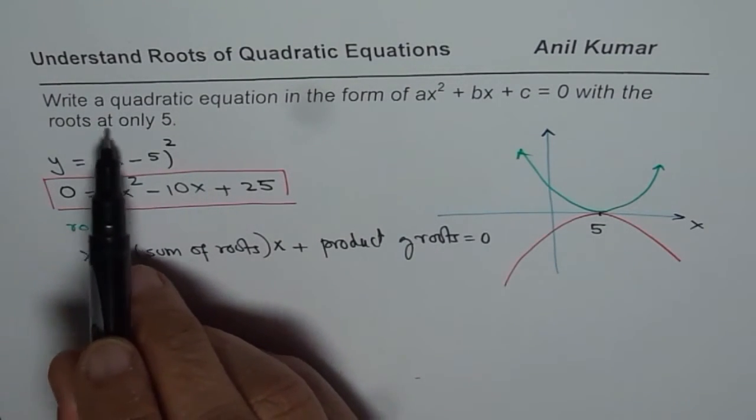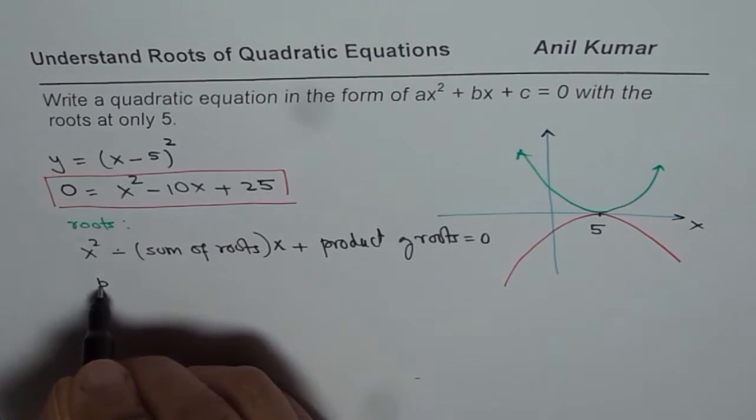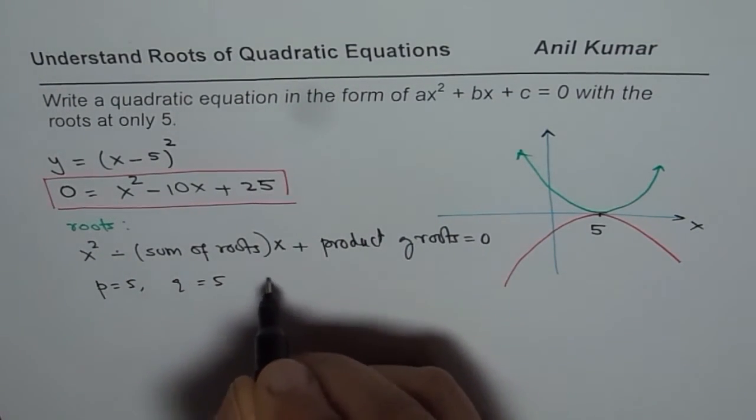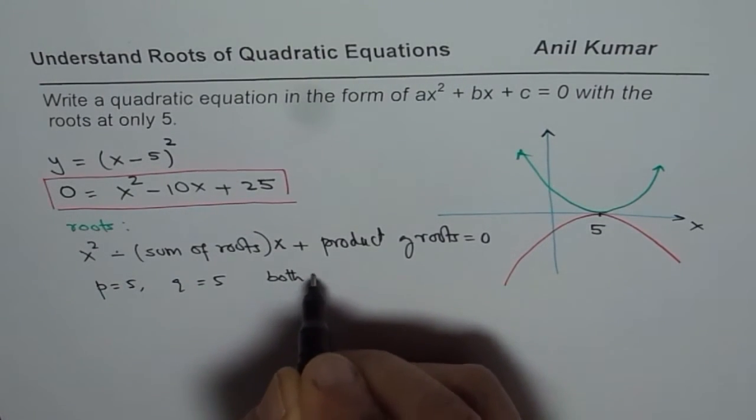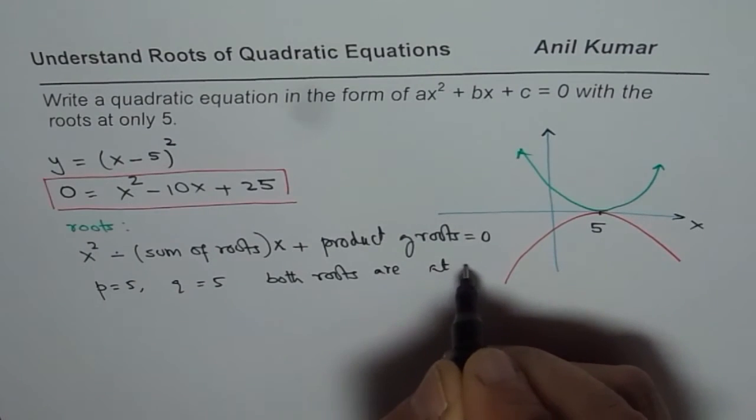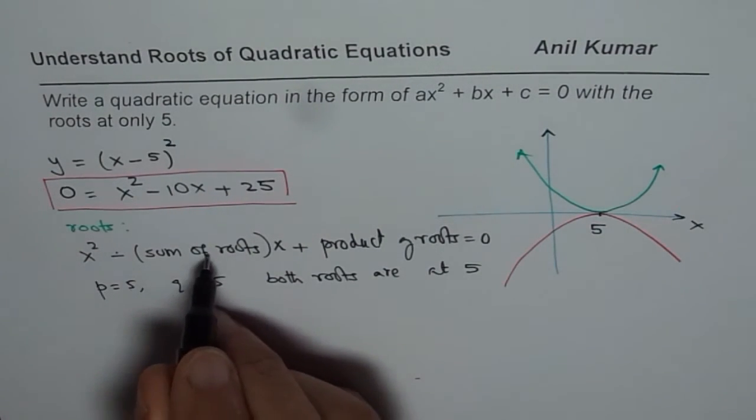Now, in this case, since the roots are at 5 only, so we have two roots. That means P equals to 5 and Q is also equals to 5. So both roots are at 5. In that case, what is this sum? Sum is 5 plus 5, which is 10.